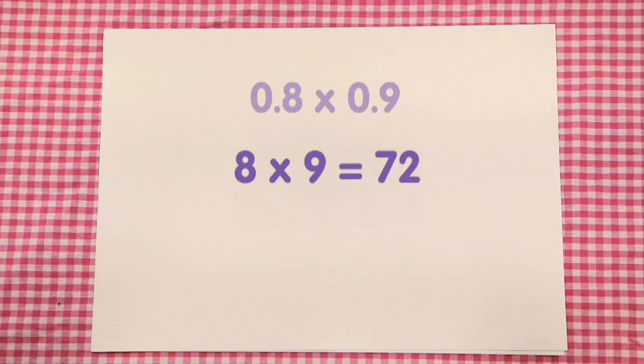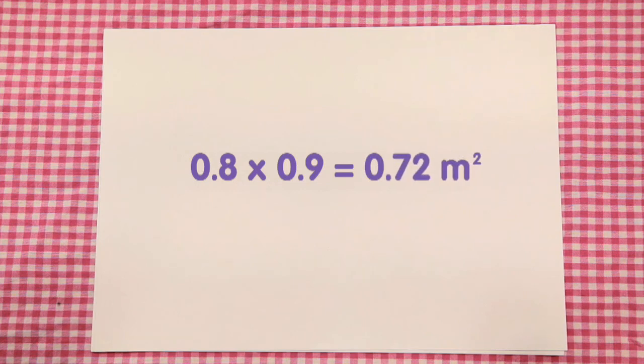All we have to do now is move the decimal point back two decimal spaces. 0.8 multiplied by 0.9 equals 0.72 metres squared. So the area of the floor of the cupboard is 0.72 metres squared.